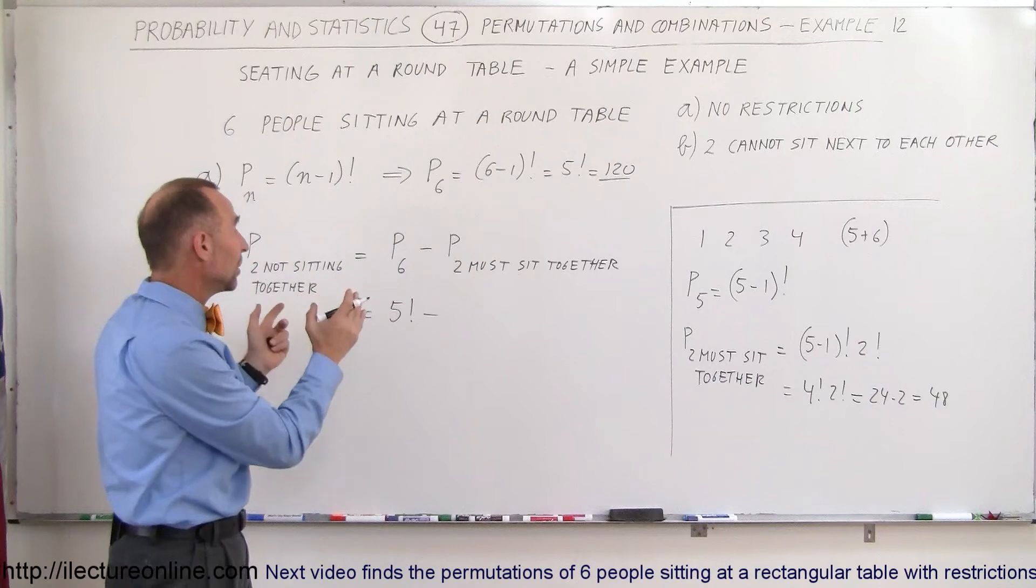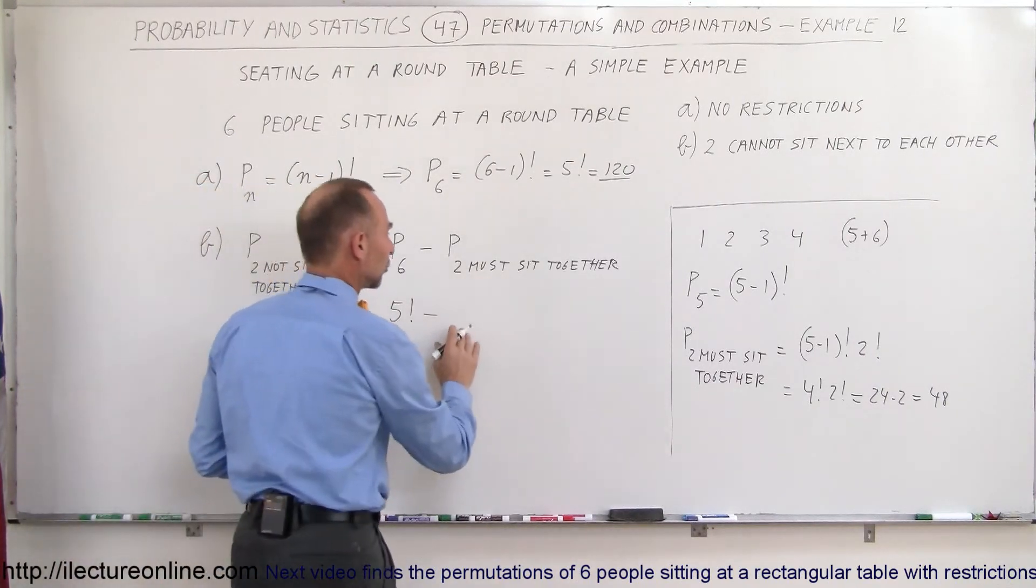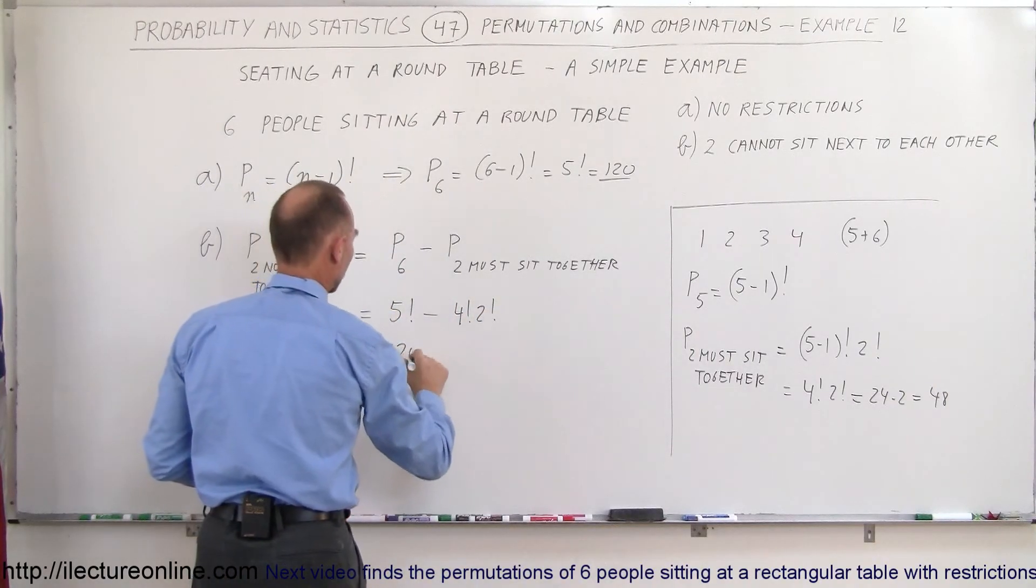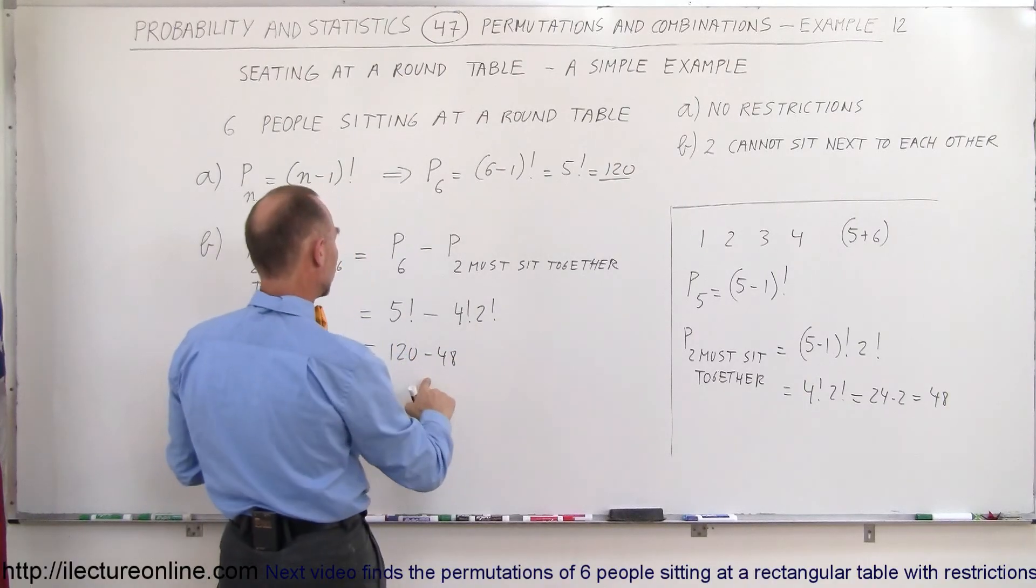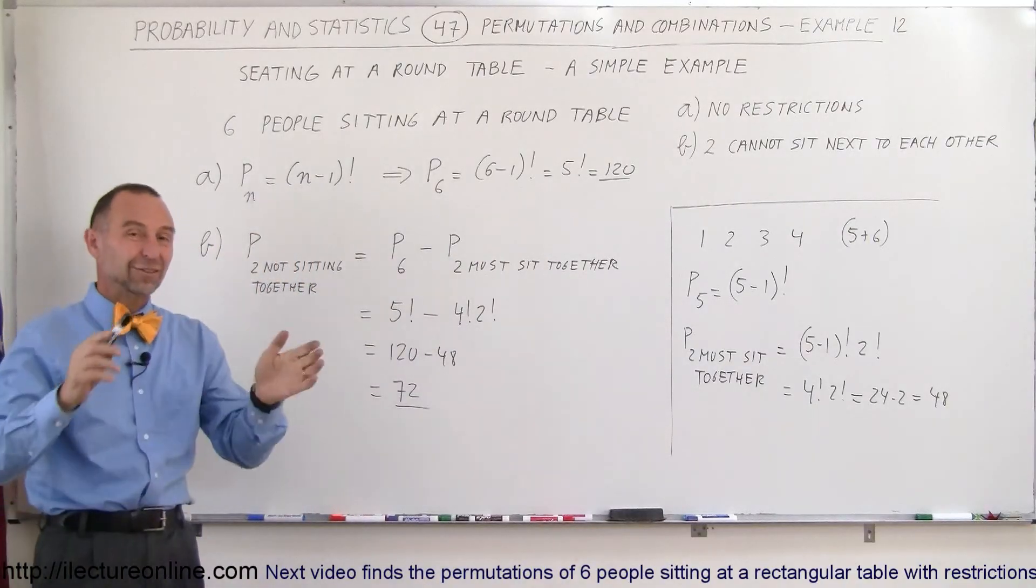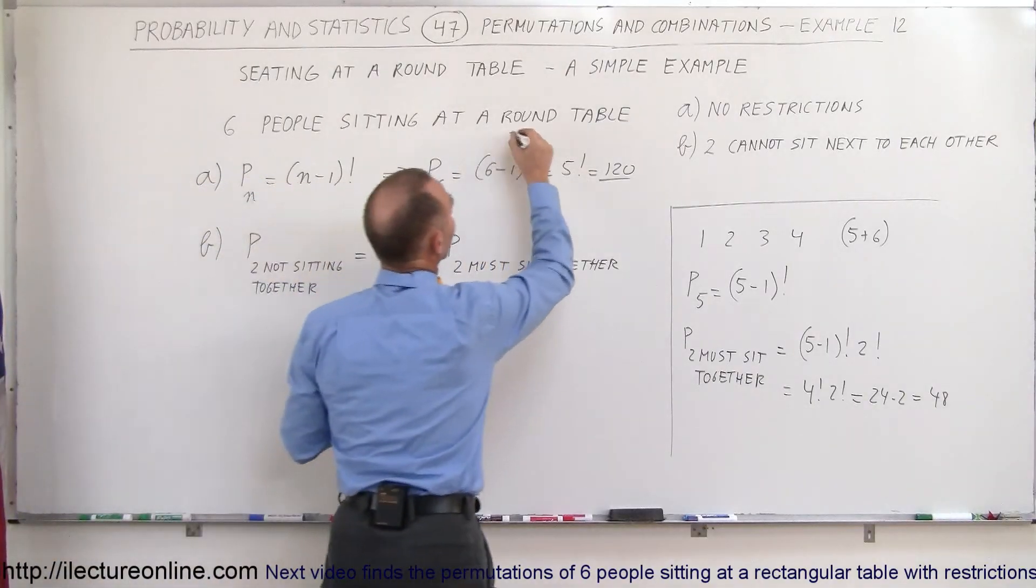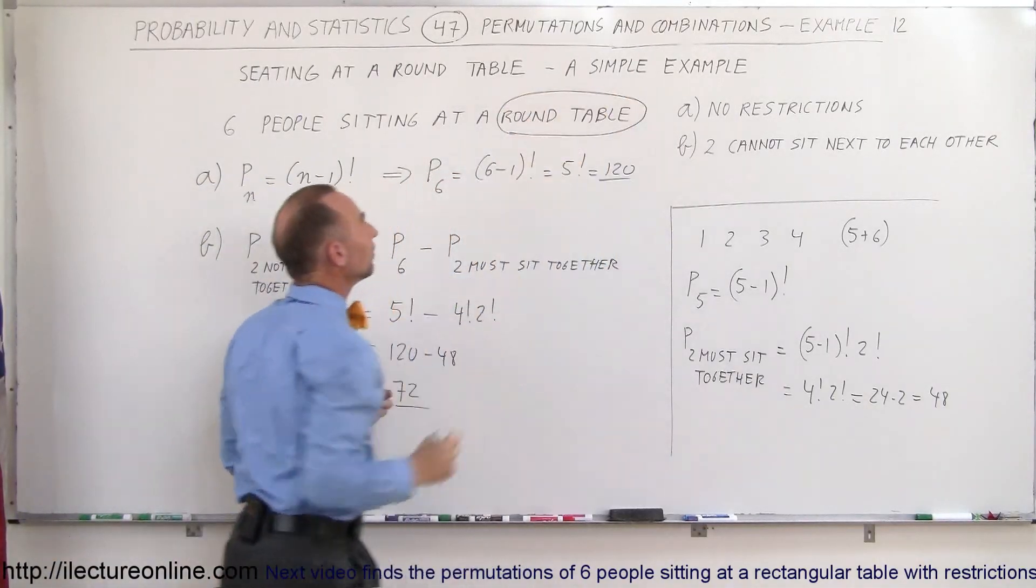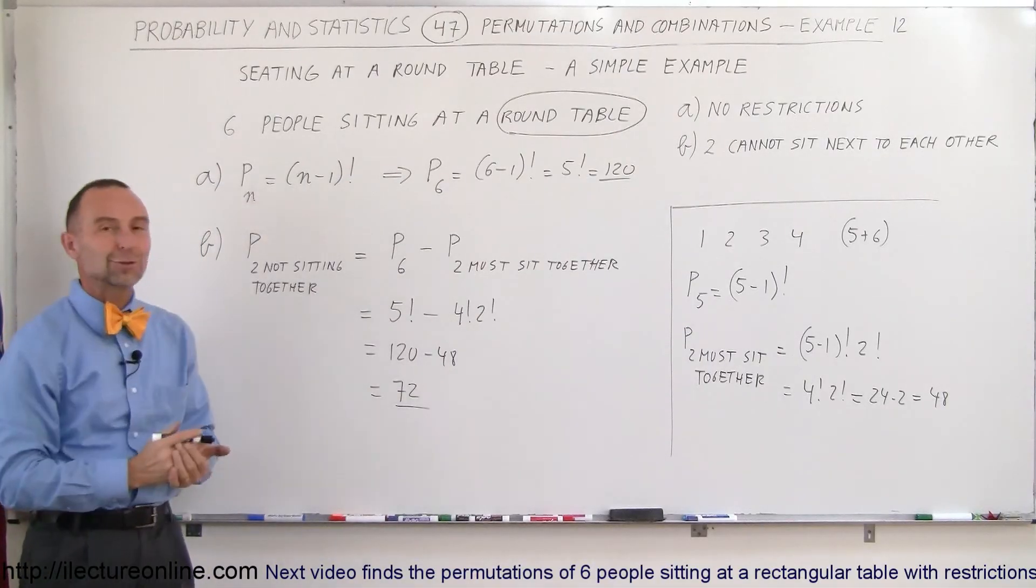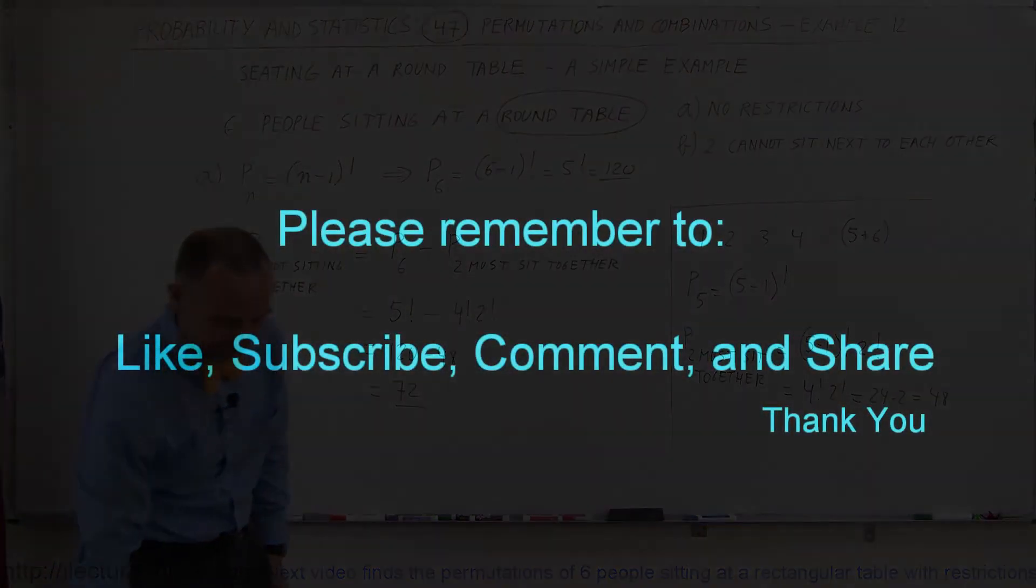The number of permutations where you have six people sitting in any which way they want around the round table is a hundred and twenty, so this becomes five factorial minus four factorial times two factorial, or a hundred and twenty minus forty-eight, which is equal to seventy-two. So there's seventy-two ways in which six people can sit around a round table, again this is for a round table, if two cannot sit together, and that's how we do that. Thank you very much.